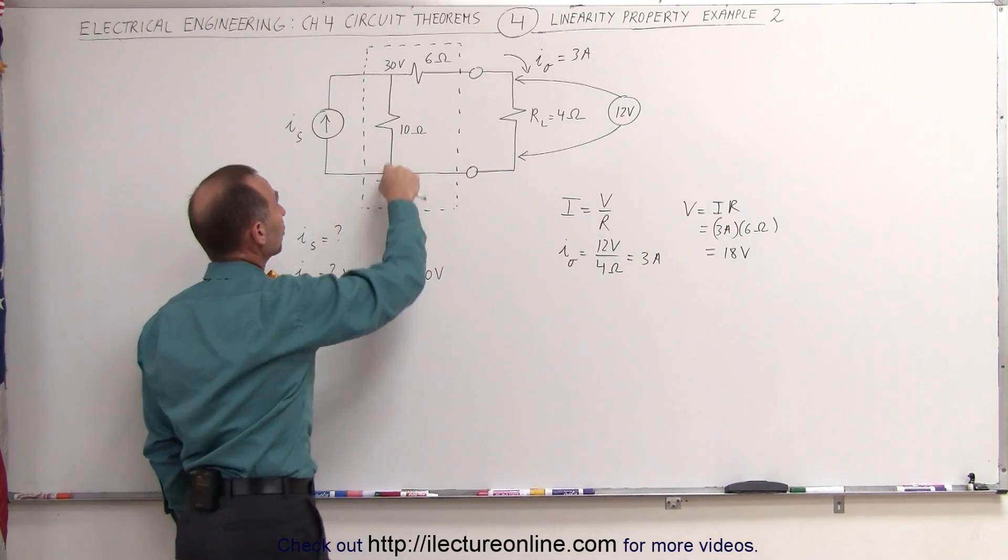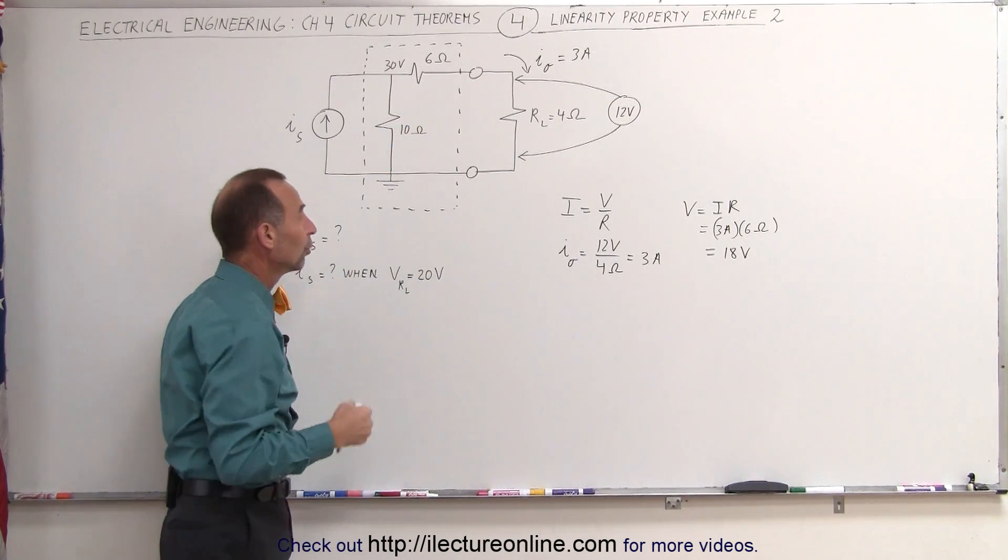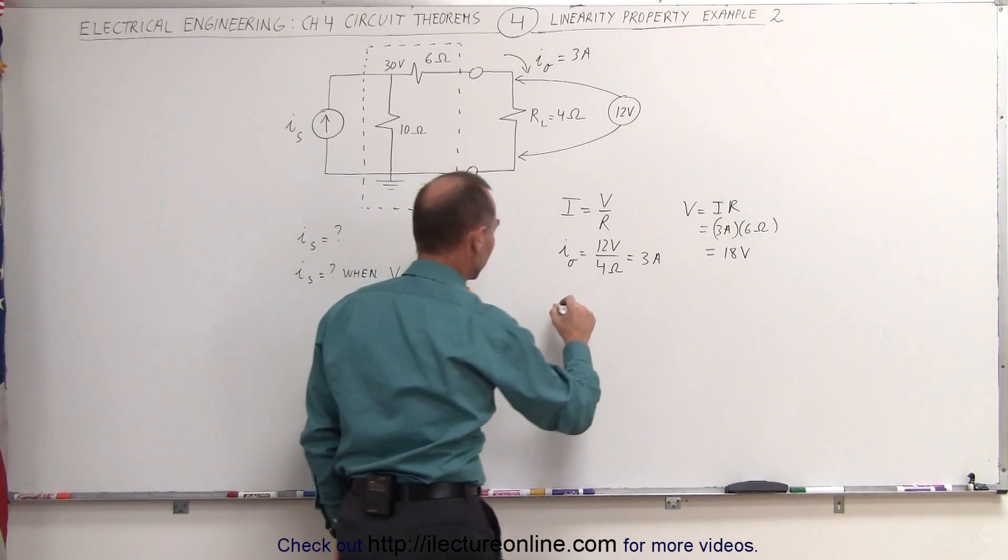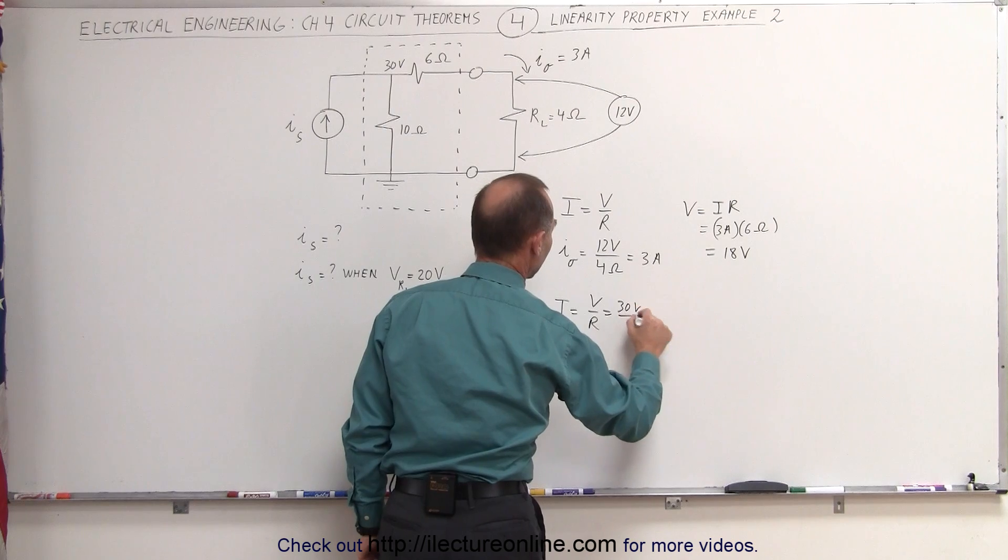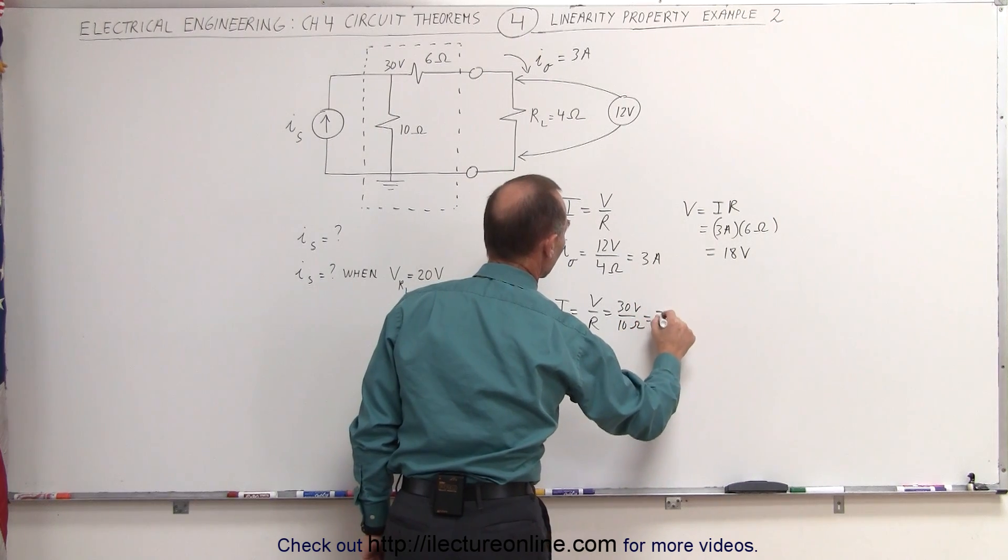So there's a 30 volt potential difference across the 10 ohm resistor, which means using Ohm's law that the current, I, is equal to V over R, which is equal to 30 volts divided by 10 ohms, which is equal to 3 amps.